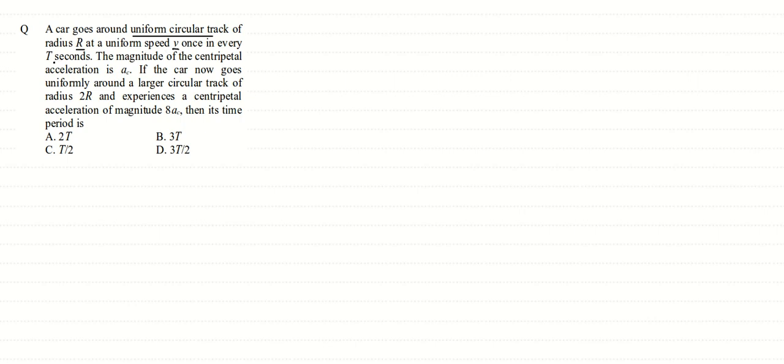In this question, a car goes around a uniform circular track of radius r at a uniform speed v, once in every t seconds — so the time period is given to us. The magnitude of the centripetal acceleration is ac. The car now goes uniformly around a larger circular track of radius 2r and experiences a centripetal acceleration of magnitude 8ac. We need to find its new time period.